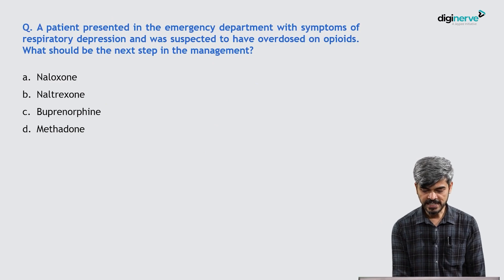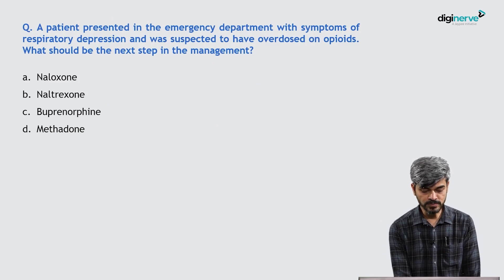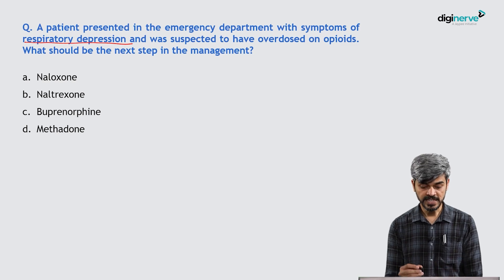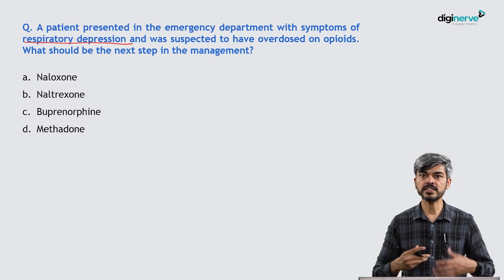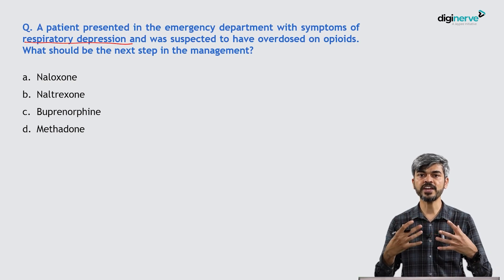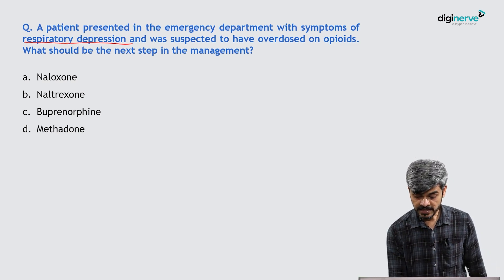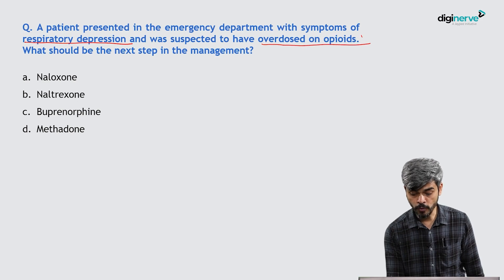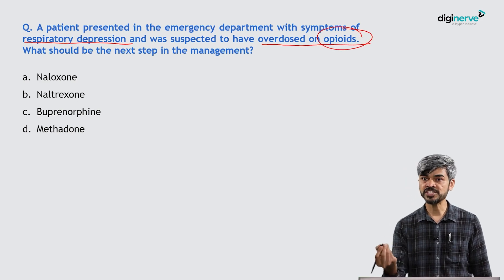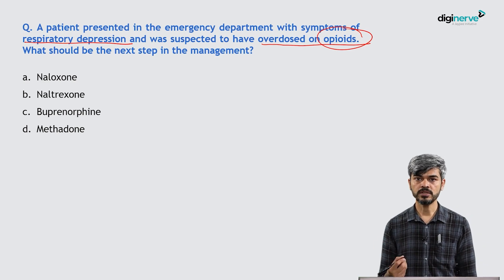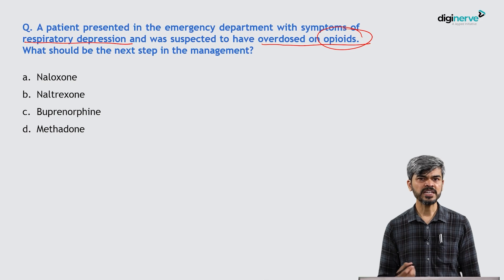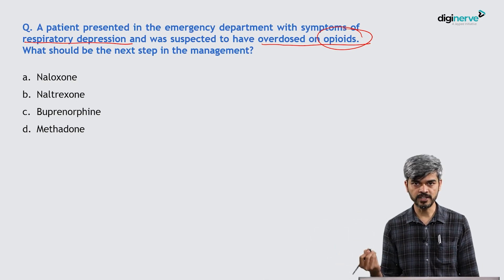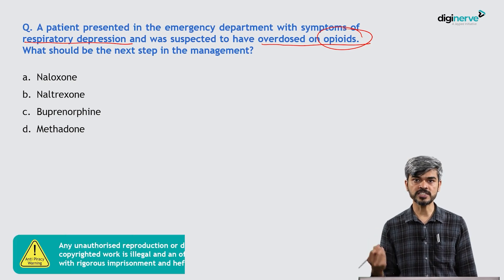A patient presented in the emergency department with symptoms of respiratory depression — breathing with a lot of effort or no visible respiratory effort — and there is suspicion of opioid overdose. Maybe he has injected heroin, consumed a lot of codeine, or used synthetic opioids like fentanyl, which is very risky. Even a small quantity can cause respiratory depression.